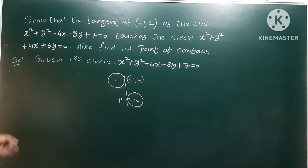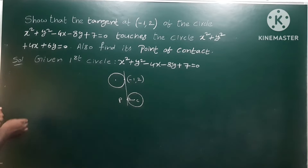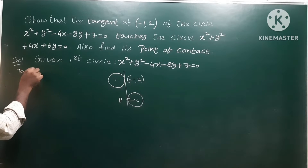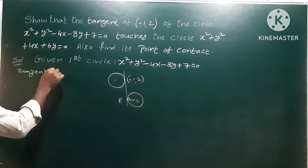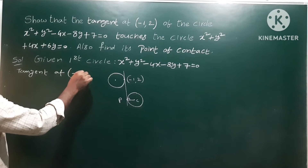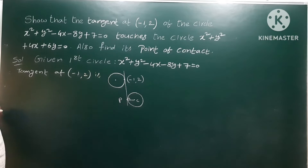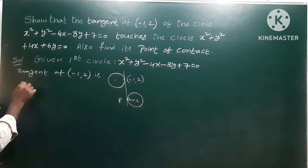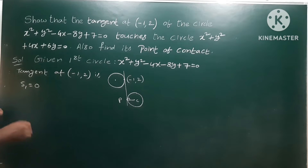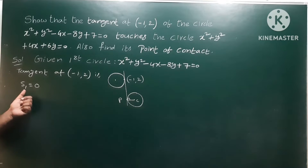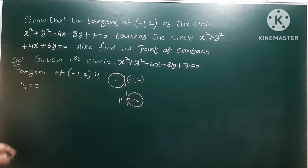First, let us write the given first circle. The tangent at point (-1, 2) on the first circle uses the formula S1 = 0. The equation of the tangent at a point is given by S1 = 0, that is: x·x1 + y·y1 + ...